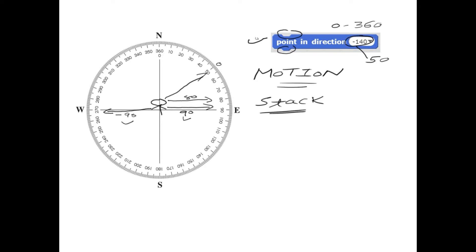This is positive 80. This is negative 80. You can add minus 80, as soon as you enter minus 80 or 280, it will point this particular sprite toward 280 degrees. You can enter minus 80 or 280 to point your sprite toward this particular direction.